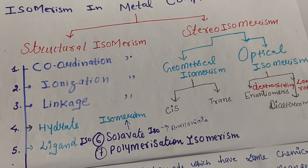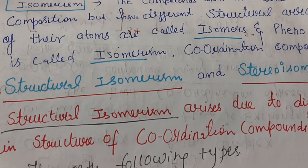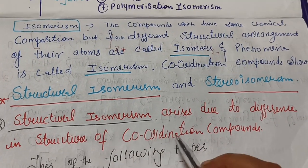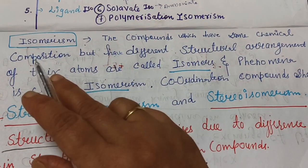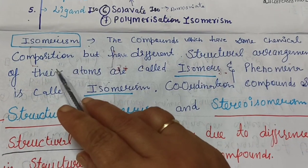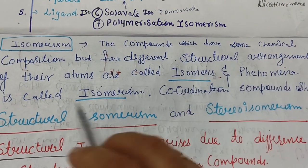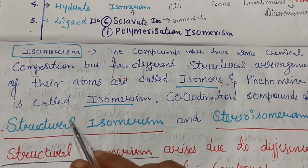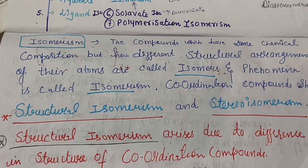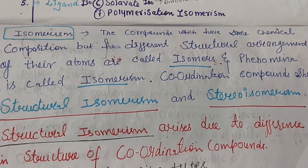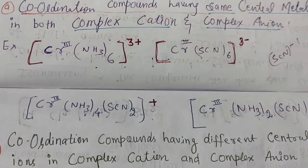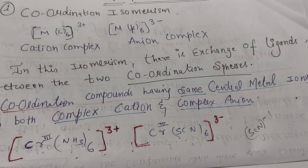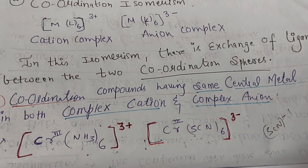Structural isomerism is important and arises due to differences in the structure of coordination compounds. The definition: compounds which have the same chemical composition but different structural arrangements of their atoms are called isomers, and the phenomenon is known as isomerism. Coordination compounds broadly have two types: structural isomerism and stereoisomerism. The first important type of structural isomerism is coordination isomerism.